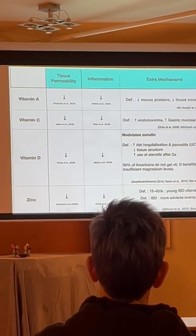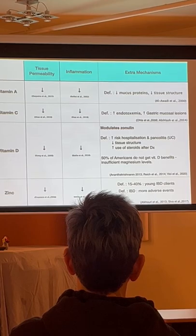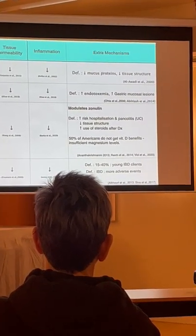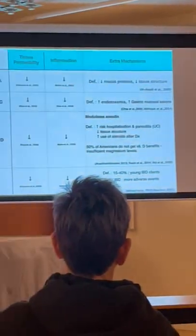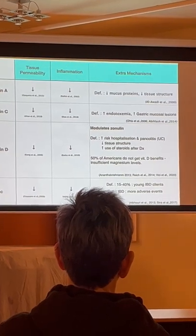Vitamin D is a huge one. So it modulates zonulin. When we eat gluten, it results in zonulin as a molecule to be released, and then that results in our intestines to separate and have all forms of leaky gut going on. And vitamin D modulates that chemical or that molecule.